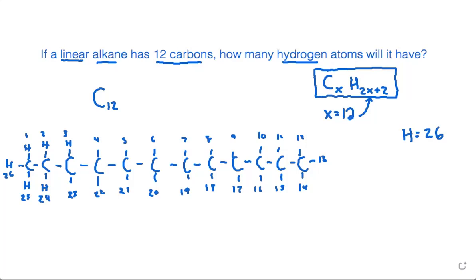So as we got by using the formula, we got 26 hydrogens, and also writing it out in a structural kind of method, we also get 26 hydrogens. So in a linear alkane that has 12 carbons, how many hydrogen atoms would it have? It would have 26 hydrogen atoms.